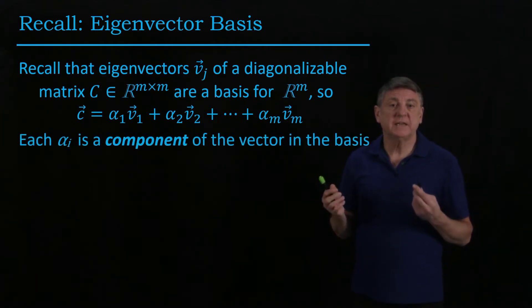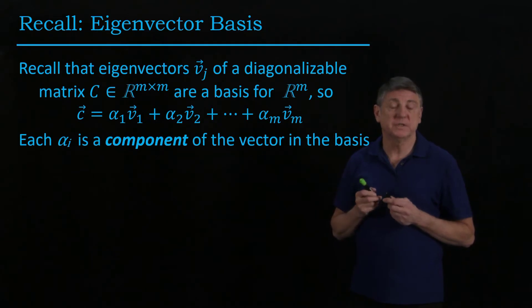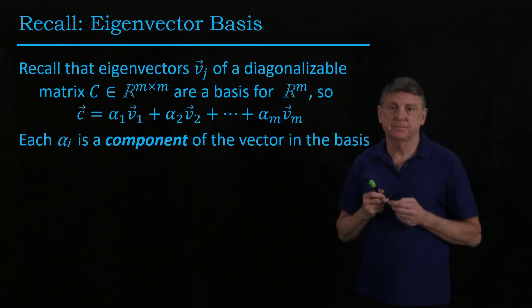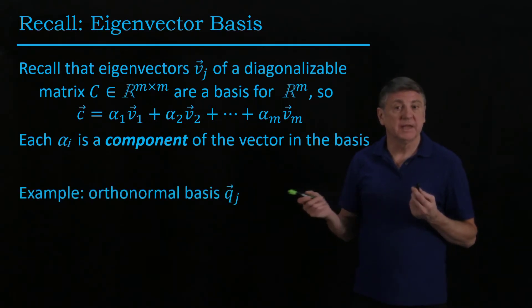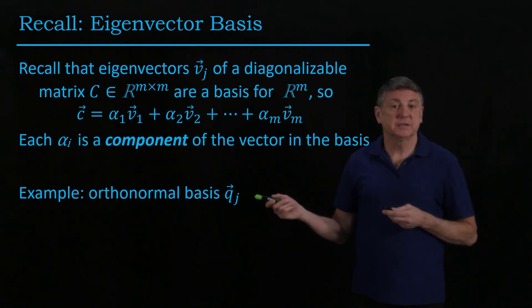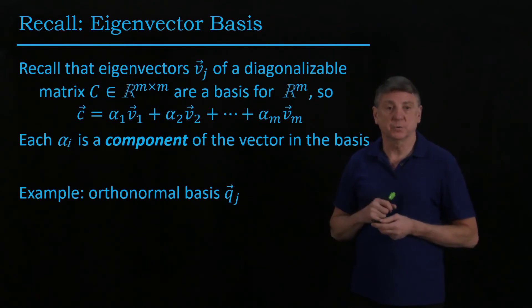We say that the scalar values alpha are components of the vector in this basis. One example is when the basis is composed entirely of orthonormal vectors.